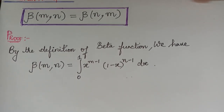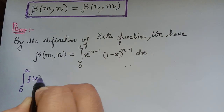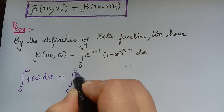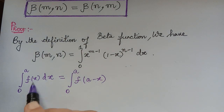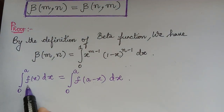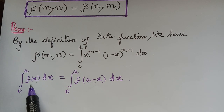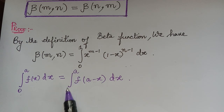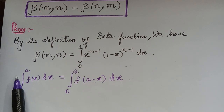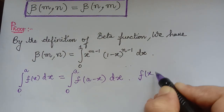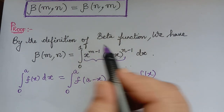Now there is a property under definite integrals which says that integral 0 to a, f of x dx is equal to integral 0 to a, f of a minus x dx. So if a function is integrated between the interval 0 to a, that function can also be written as integral 0 to a of f of a minus x dx. We are going to apply this property in our integral, where f of x is taken as x to the power m minus 1 multiplied with 1 minus x to the power n minus 1.